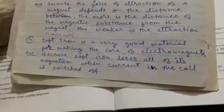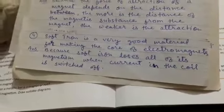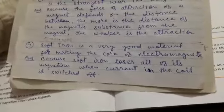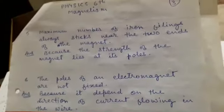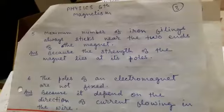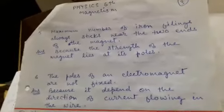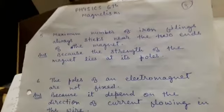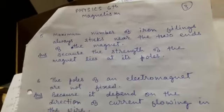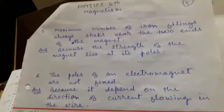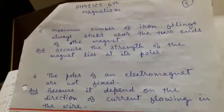Question 4: Soft iron is a very good material for making the core of an electromagnet — why? Because soft iron loses all of its magnetism when the current in the coil is switched off. Question 5: Maximum number of iron filings always stick near the two ends of the magnet — why? Because the strength of the magnet lies at its poles.